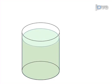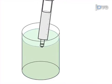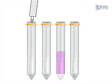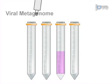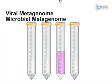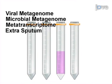Next, the sample is immediately homogenized and equally distributed into four tubes labeled as viral metagenome, microbial metagenome, metatranscriptome, and extra sputum.